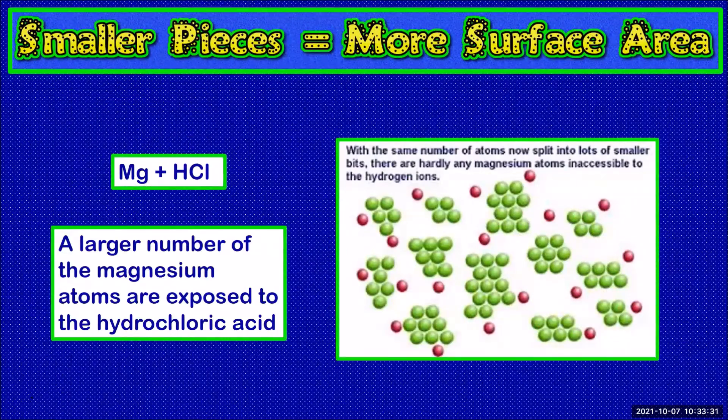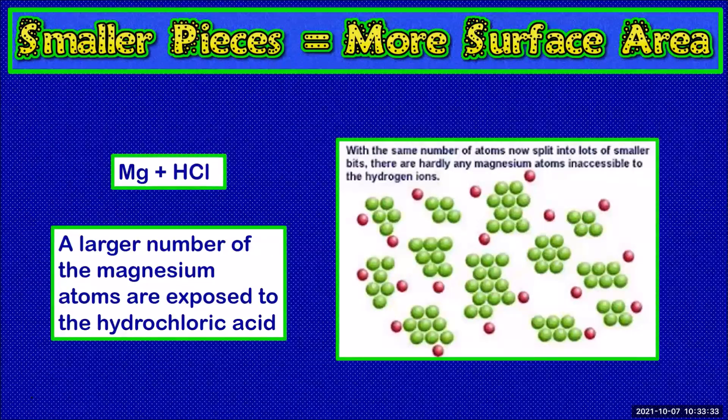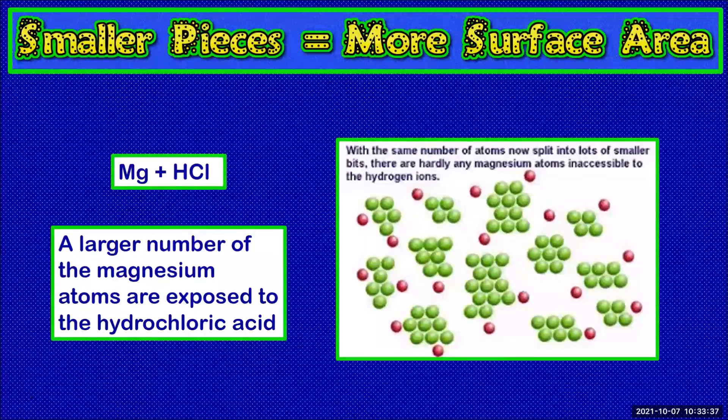If we broke that piece of magnesium into small pieces there is a much greater surface area of magnesium being exposed to the acid.